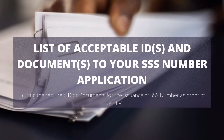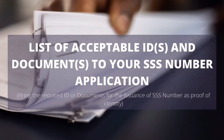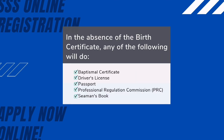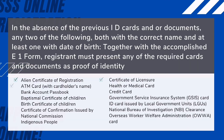Here is the list of accepted documents as supporting documents for your SS number application. Primary supporting documents are listed. In the absence of a birth certificate, any of the following documents will do. In the absence of the previous ID cards and documents, any two of the following — both with the correct name and at least one with a date of birth — are accepted.